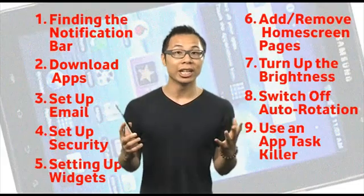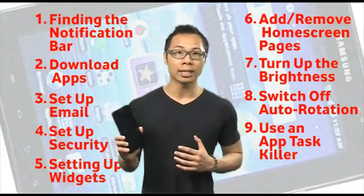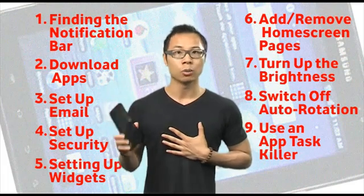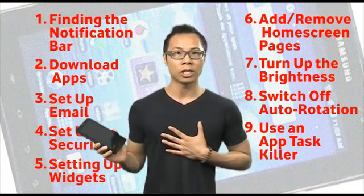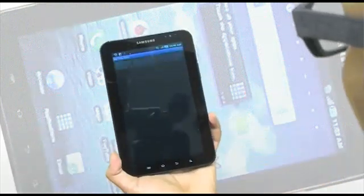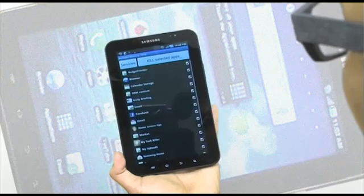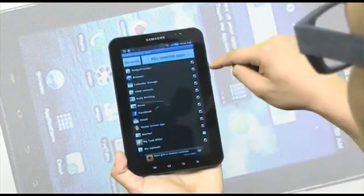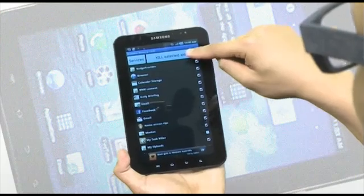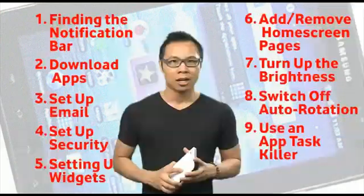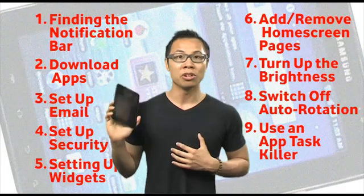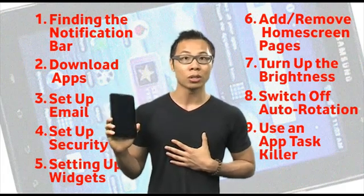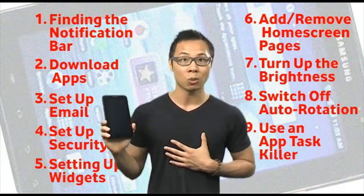One thing you really want to consider when you get the Galaxy Tab is to download a task killer application, which you can find on the application market. It allows you to see all the applications running in the background and lets you stop the ones you don't want. Using a task killer will not only improve the performance of your Galaxy Tab, but also improve battery life.